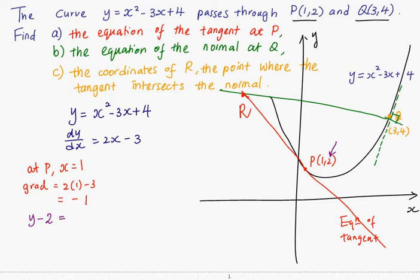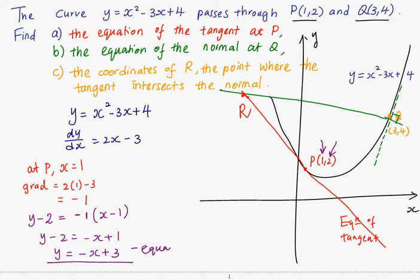equals to the gradient, negative 1, times x minus x1, which is 1. We simplify this. We have y equals to negative x plus 3. So that is the equation of the tangent at P. This is part a.